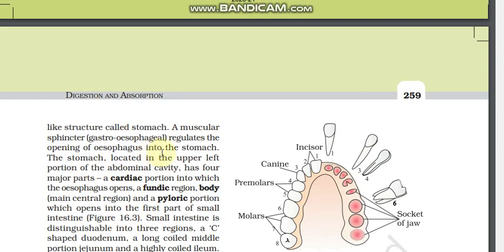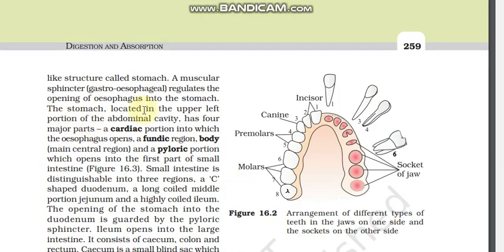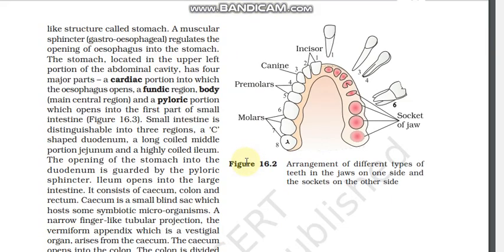The stomach has three portions: cardiac, fundic, body, and pyloric. The cardiac portion is where the esophagus opens; the fundic region is the upper part; the body is the main central region; and the pyloric portion opens into the small intestine. The small intestine starts with a C-shaped structure called the duodenum, followed by the jejunum and ileum.